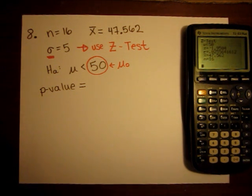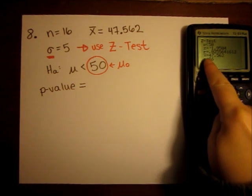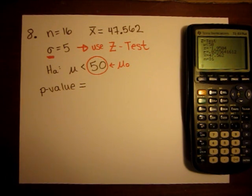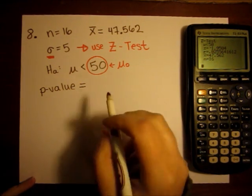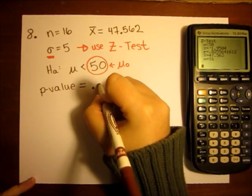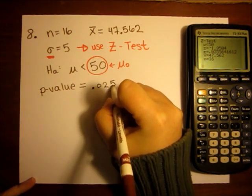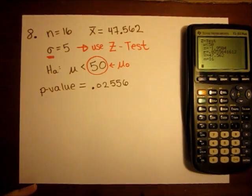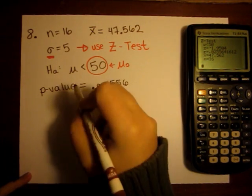And then go to calculate. When I calculate, the number that follows the letter p is my p value. So my p value is .02556 or about a .026.